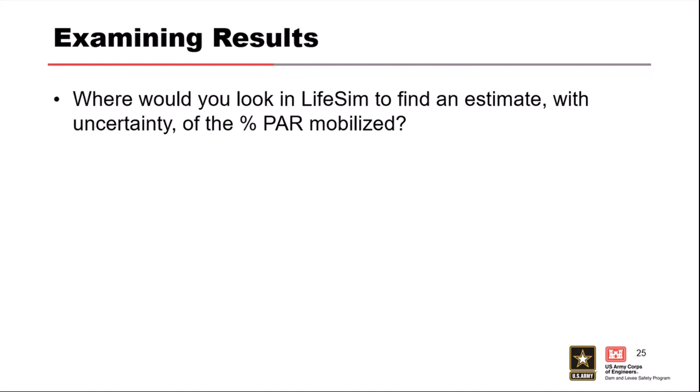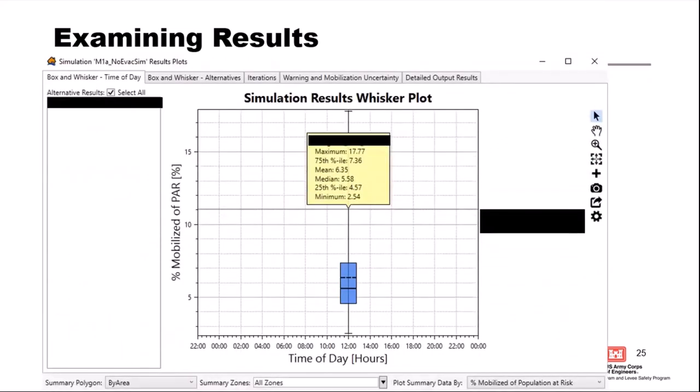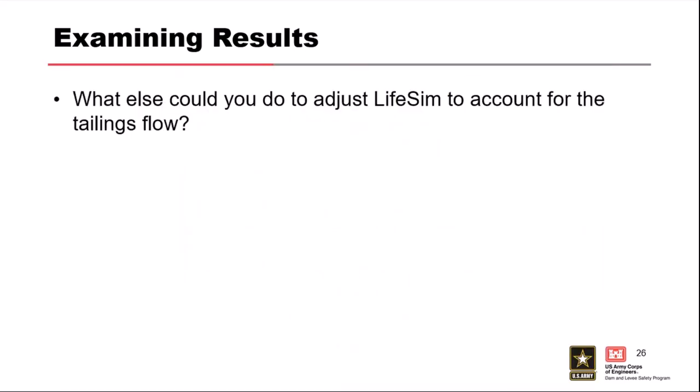Where would you go in LifeSim to find an estimate with uncertainty of the percent of your population at risk that mobilized? Anyone remember? Yeah. Let's change this little drop down down here from total mean life loss to percent mobilized population at risk. So, this is super low. In most cases, when we do this, I would expect the inverse of this number. So, it's five percent. I would expect it to be closer to 80, 90 percent generally. Unless it's a situation where it's rapid onset and people downstream have almost no time. So, areas immediately downstream have almost no time. In which case, you might see a pretty low mobilization rate. What else might you do to adjust LifeSim to account for tailings flow?